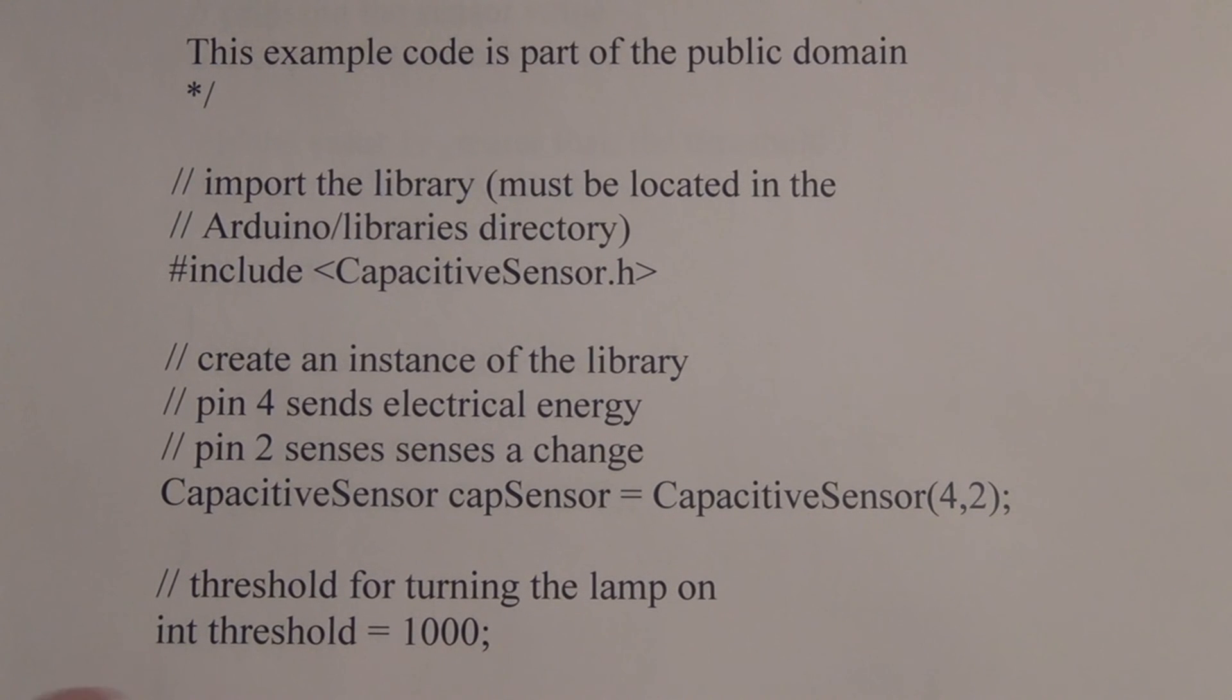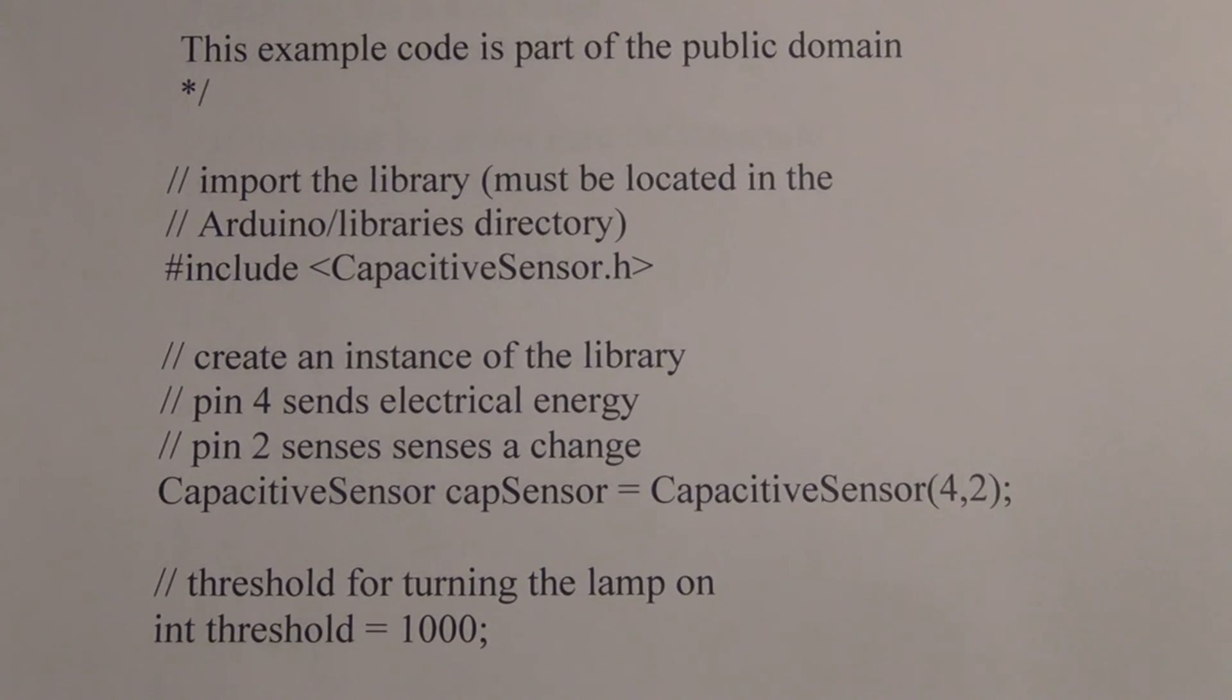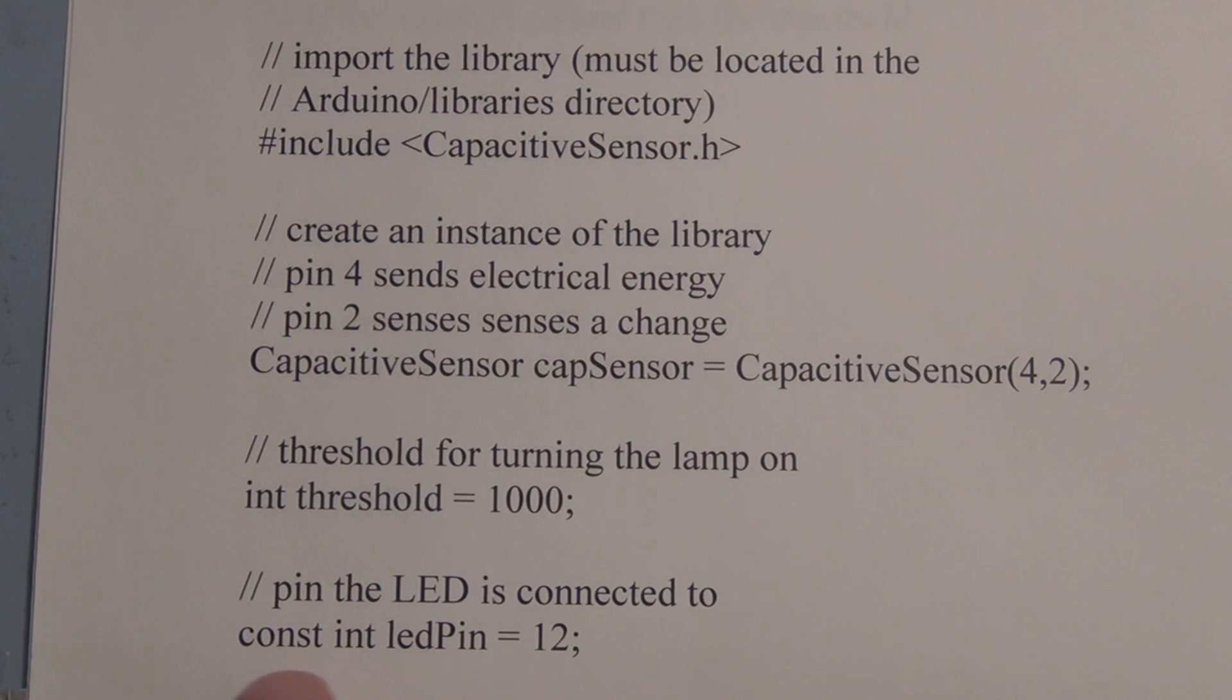Because I have a certain piece of foil here, a certain size, and that will vary depending on what material you're using and the size of it. So you can play around with this number. Here we're creating the constant integer variable LED pin. The LED is going to be connected to pin twelve.